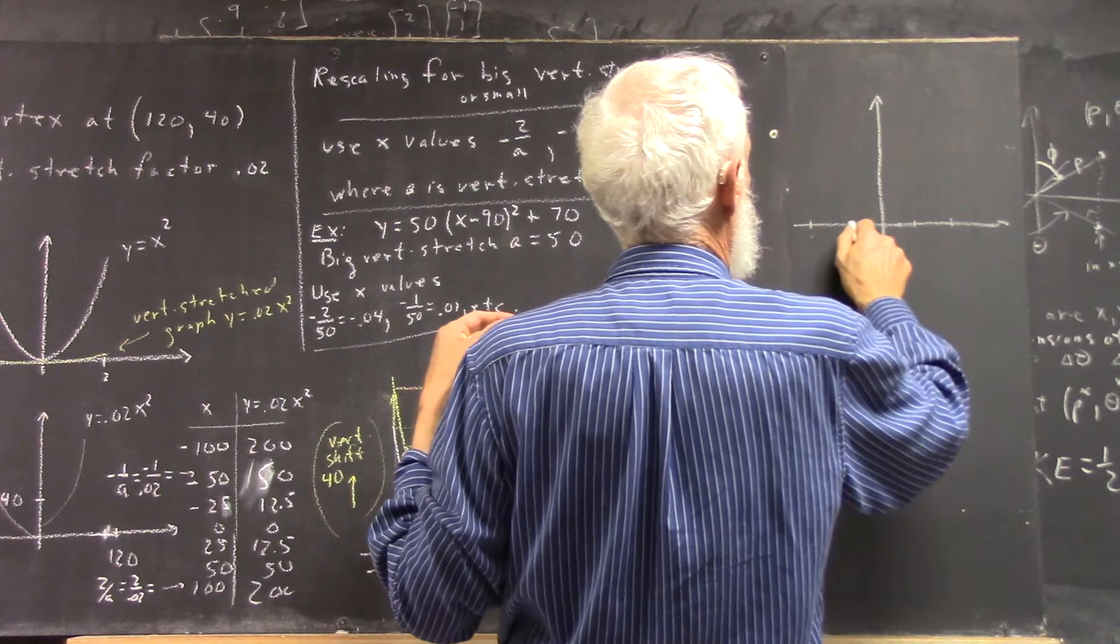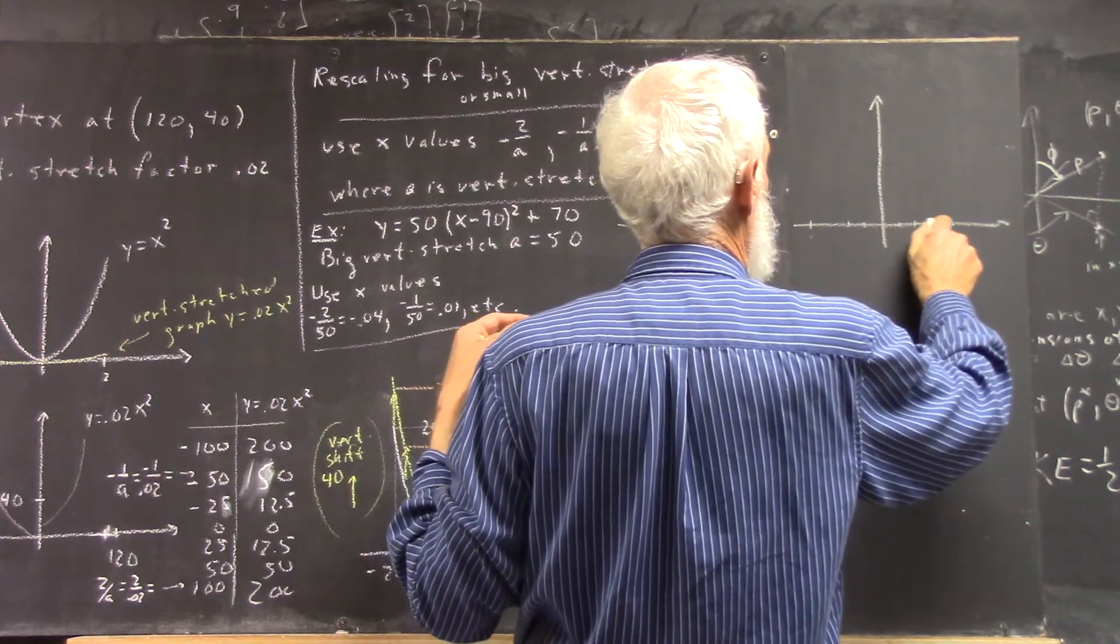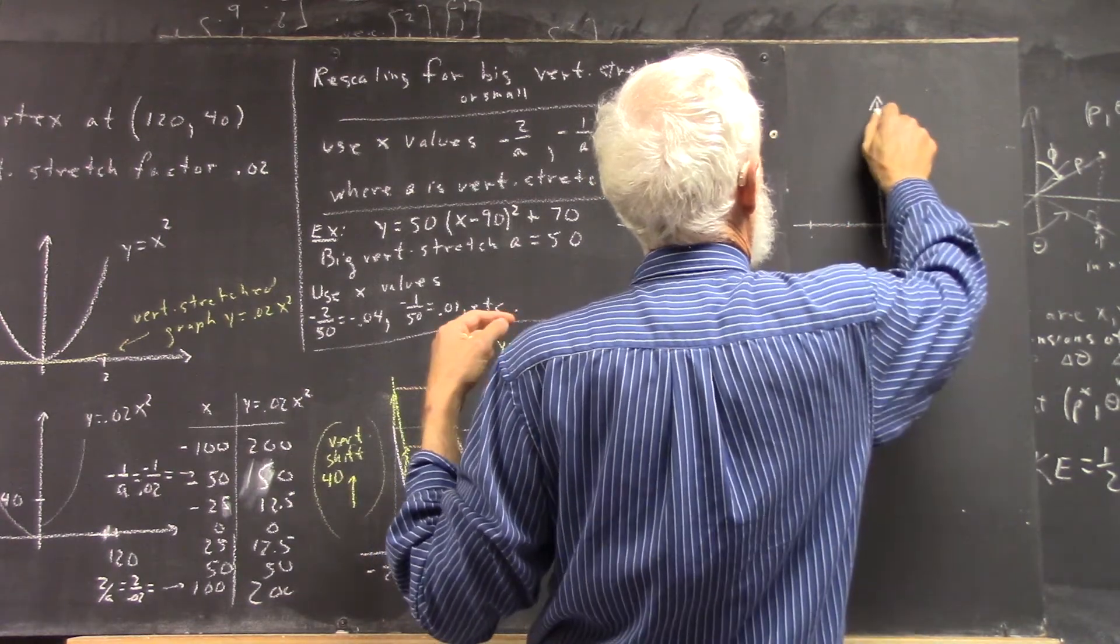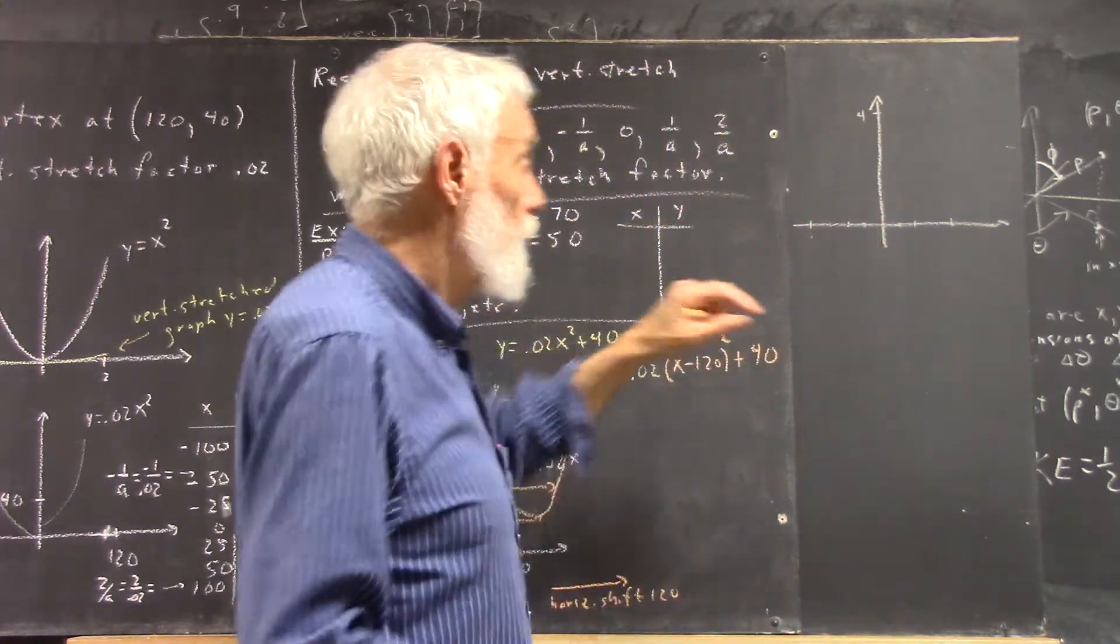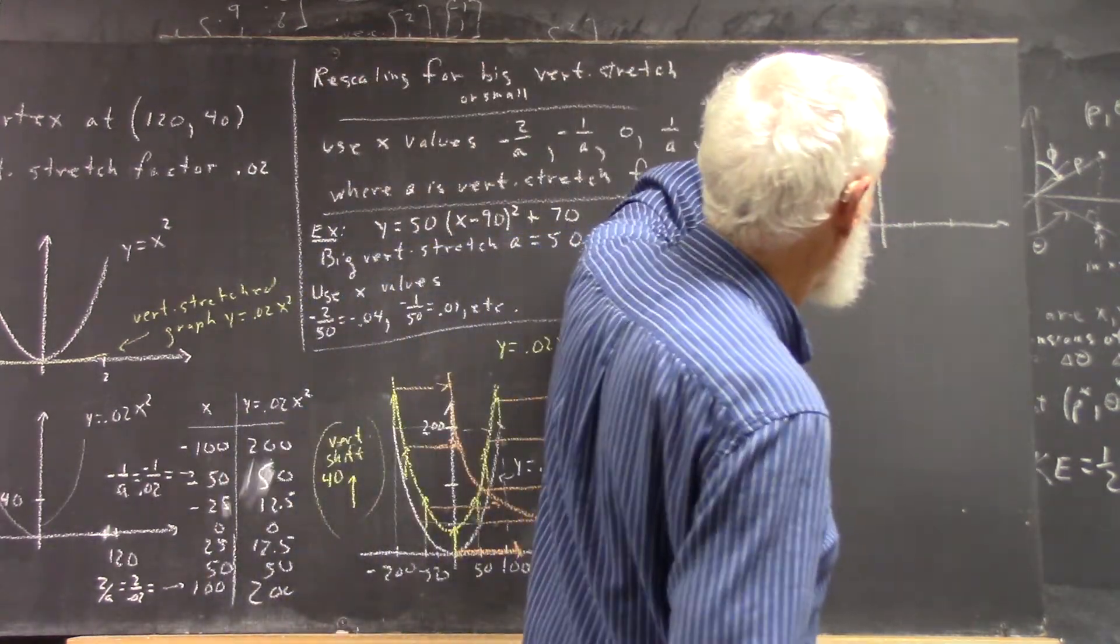Now we can think, negative 2, negative 1, negative 1 half, 1 half, 1, 2, and we can think 4. Think of it, don't write it down, okay?